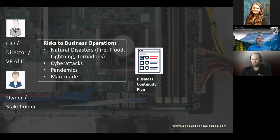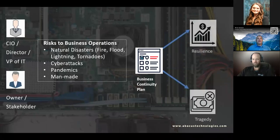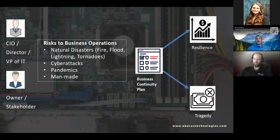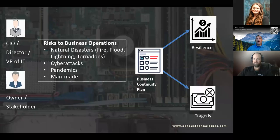The stakeholders — CIOs, directors — have to manage all these applicable risks. Their business continuity plan determines two things: either they're going to be resilient and continue to operate and save their business, or there's going to be tragedy — tremendous financial loss, loss of employees, loss of key vendors and customers. How they approach the plan, how they write it up, and how they do that planning is really what's going to determine the outcome.